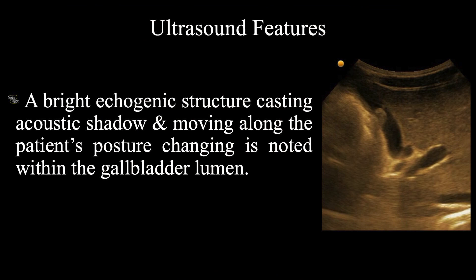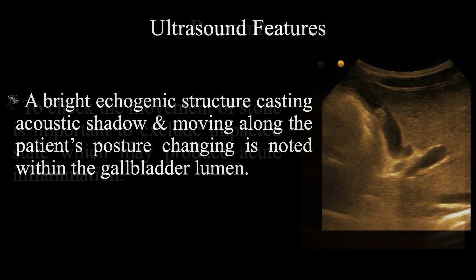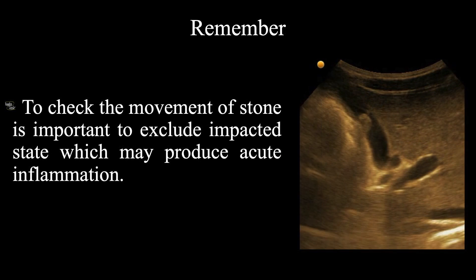In summary, a bright echogenic structure casting acoustic shadow and moving along with the patient's posture change is noted within the gallbladder lumen. There is a tiny echogenic foci at the wall of the gallbladder casting comet tail artifacts, suggesting adenomyomatosis. Another take-home message: to check the movement of the stone is important to exclude impacted state, which may produce acute inflammation.